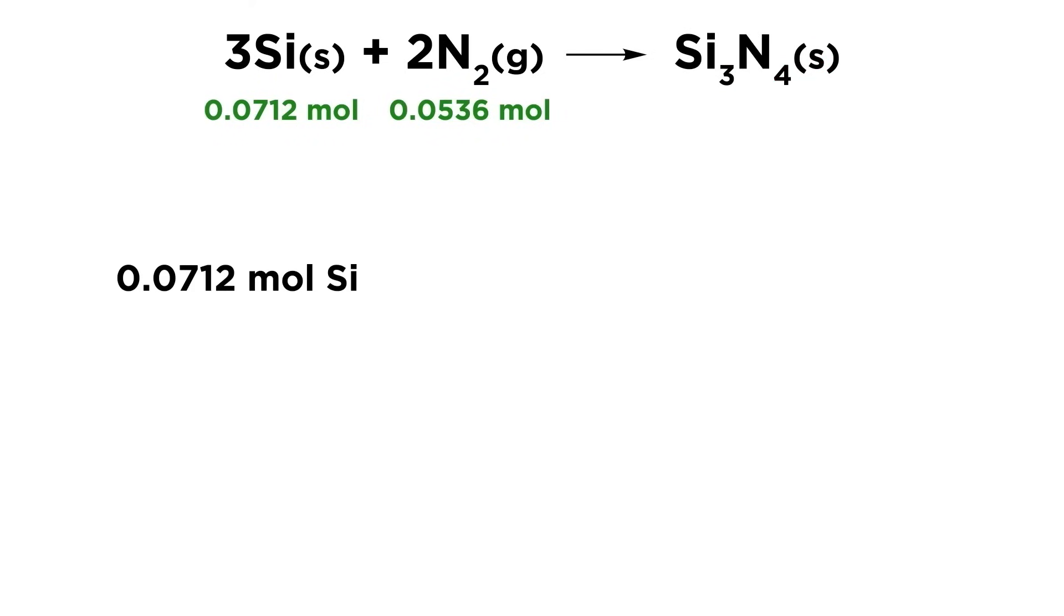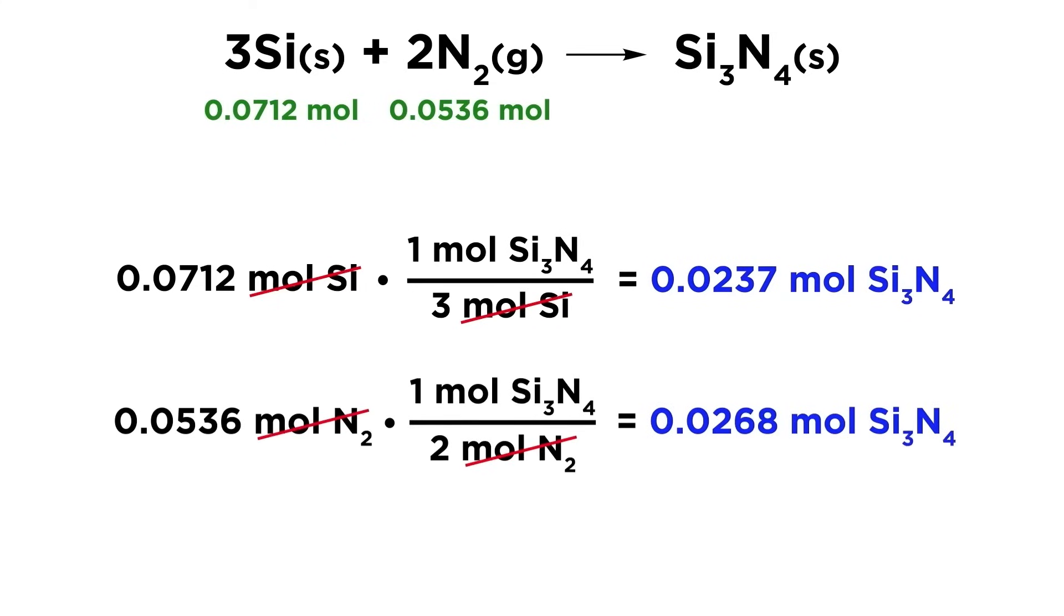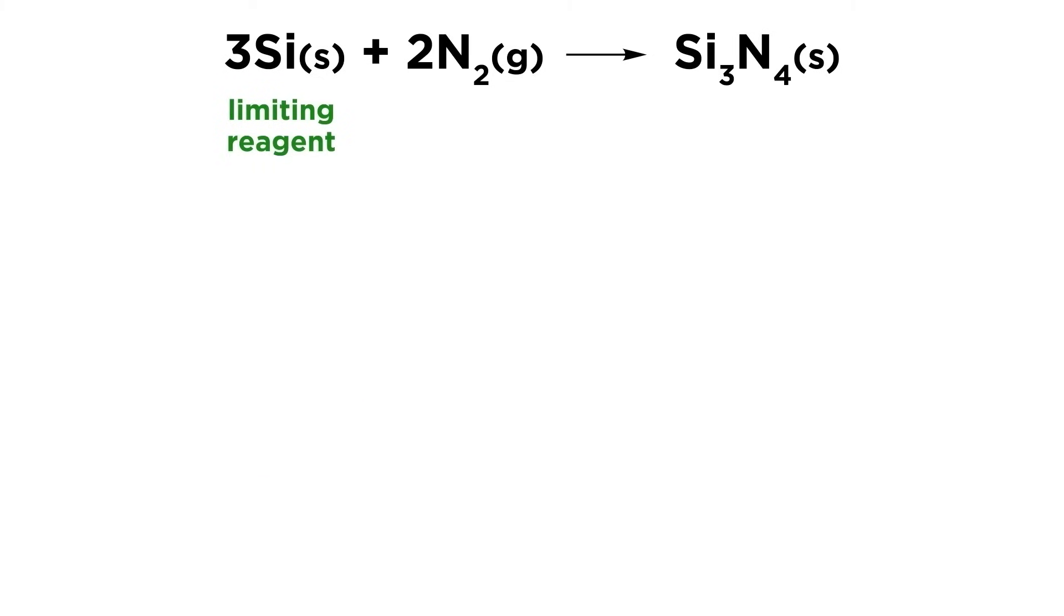This many moles of silicon could potentially generate 0.0237 moles of product. This many moles of nitrogen could potentially generate 0.0268 moles of product. The silicon cannot produce as much, so it must necessarily run out first, which means that silicon must be the limiting reactant.